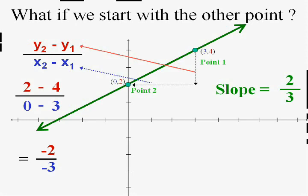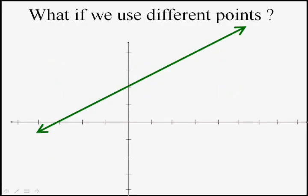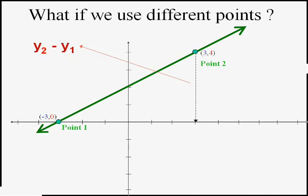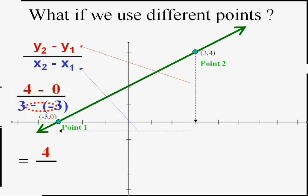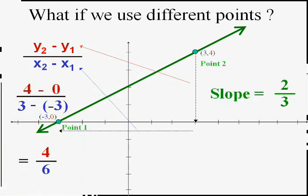So it doesn't matter which point is point one and which is point two. Even using completely different points on this line — negative three-zero and three-four — our rise is y2 minus y1, which is four minus zero, over our run x2 minus x1, which is three minus negative three. Remember when we subtract a negative, the two negatives become a positive. Four minus zero is four and three minus negative three is six. We always have to reduce — and we still get two-thirds.